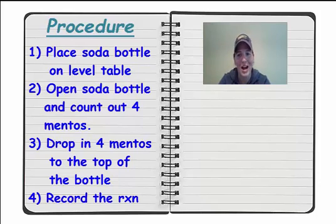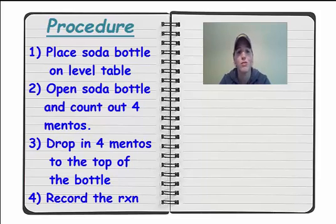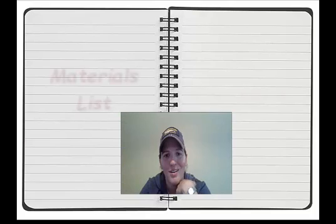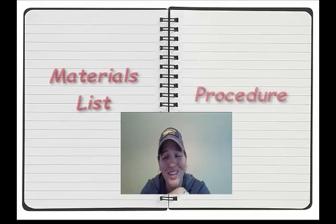This is the procedure I came up with. First, place the soda bottle on a level table. Then open the soda bottle and count out four Mentos. Drop in four Mentos at the top of the bottle and record the reaction.